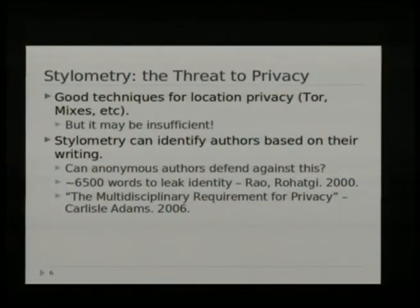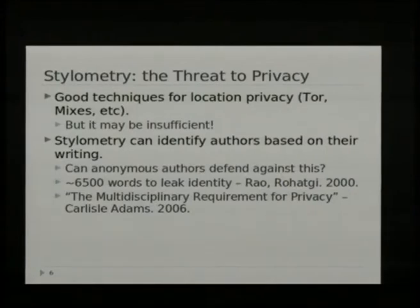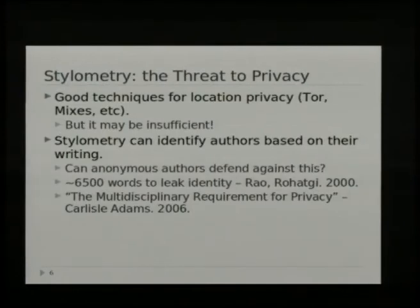There has been some work in the past showing that it only takes about 6,500 words to correctly identify an author — to have a writing profile of that author in order to identify them in anonymous documents. A recent article by Carlisle Adams points out the need for multiple disciplines to be incorporated in research towards overall privacy and anonymity. There are two main methods of stylometry: supervised and unsupervised. I'm going to go over both and give you an example of how both can pose a threat to anonymity.